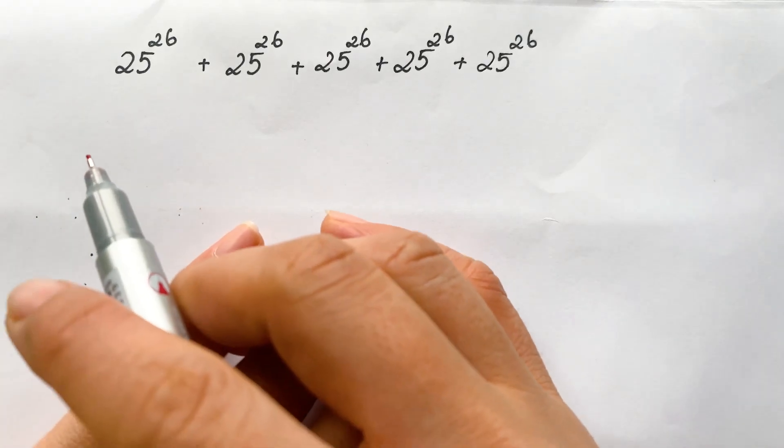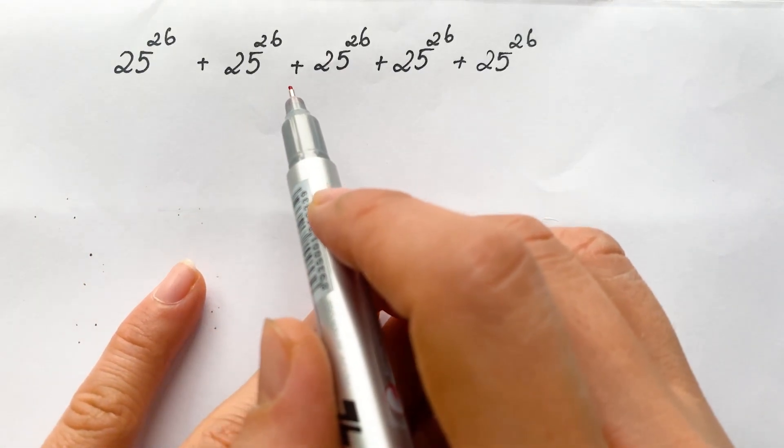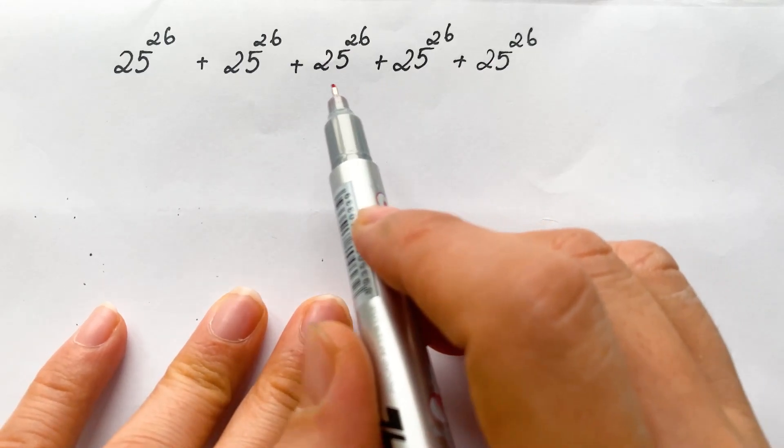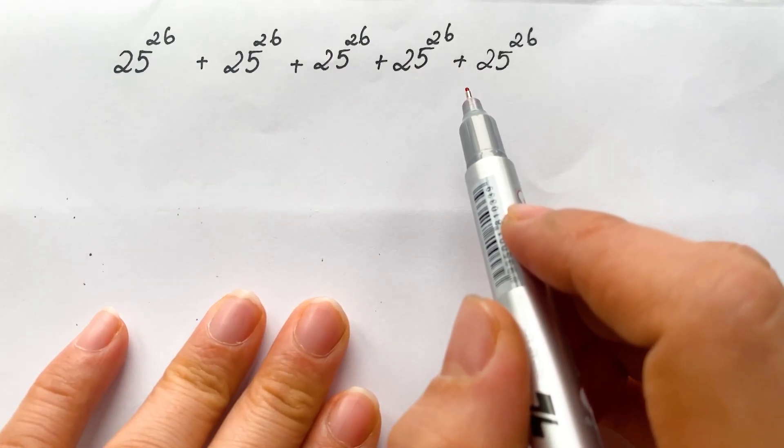Hello, how to simplify the exponential expression? We have 5 terms in expression here, right?